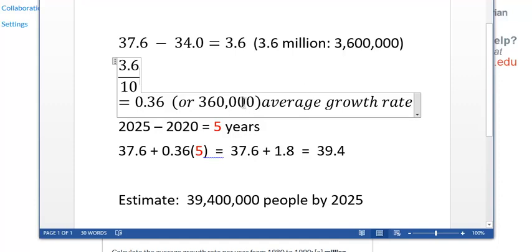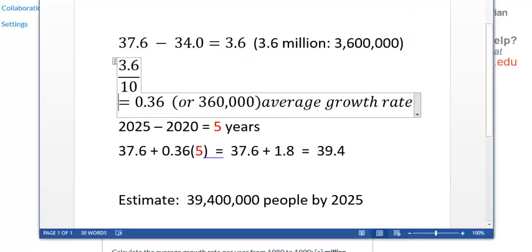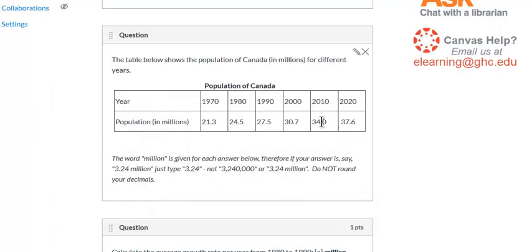So that's how we get our average growth rate of 0.36. In other words, on average between 2010 and 2020, the population increased by 360,000 people per year. Then we use that to say, well, if it keeps going like that, what will it be by 2025?